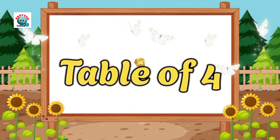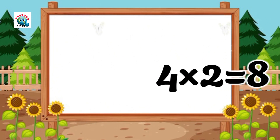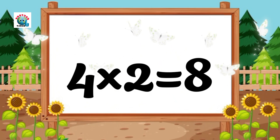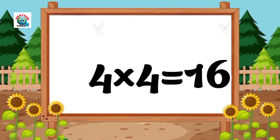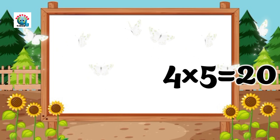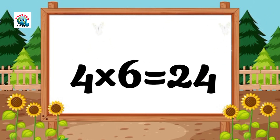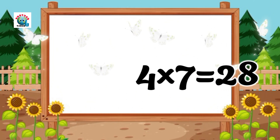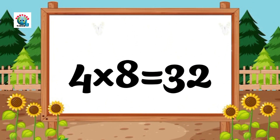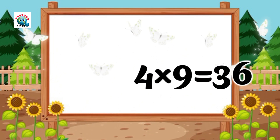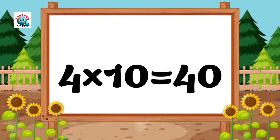Table of four. Four ones are four, four twos are eight, four threes are twelve, four fours are sixteen, four fives are twenty, four sixes are twenty-four, four sevens are twenty-eight, four eights are thirty-two, four nines are thirty-six, four tens are forty.